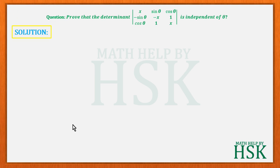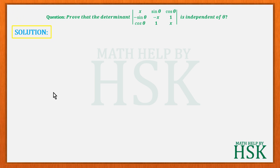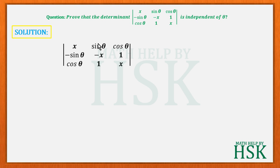Taking the determinant, we see that no row or column operation can be directly applied, and no other trick can be performed. So we are going to make things very simple by expanding this determinant along the first row.